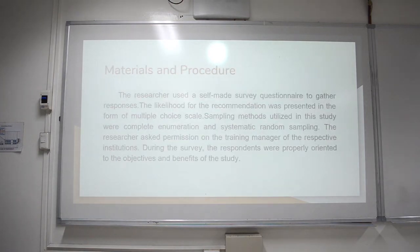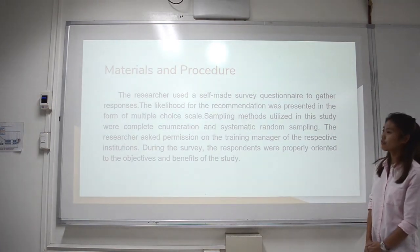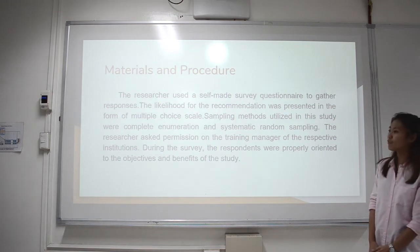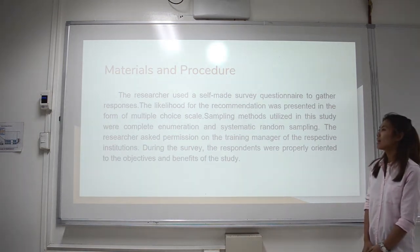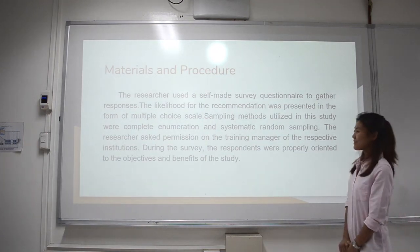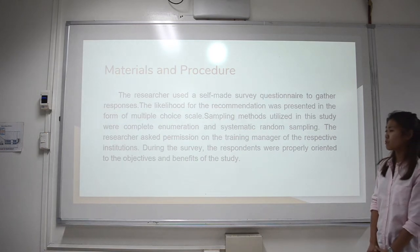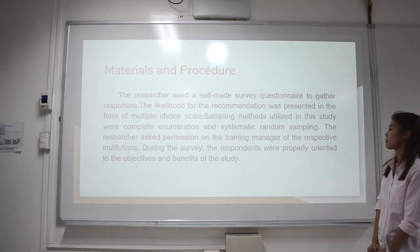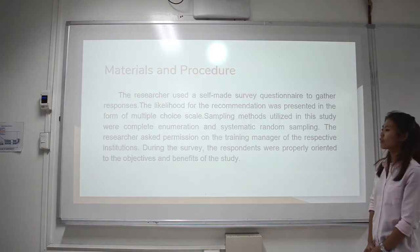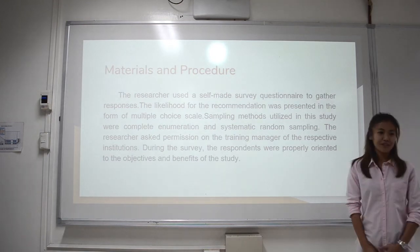The researcher used a self-made survey questionnaire to gather responses. The likelihood for the recommendation was presented in the form of a multiple choice scale. Sampling methods utilized in this study were complete enumeration and systematic random sampling. The researchers asked the permission of the training manager of the respective institution. During the survey, the respondents were properly oriented to the objectives and benefits of this study.